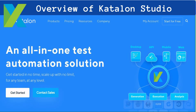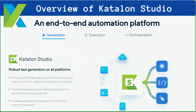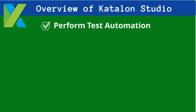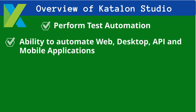Katalon Studio is a fairly simple, straightforward automation testing tool that you don't have to have great programming knowledge to write automation test cases. The primary reasons for the increase in popularity of Katalon Studio in automation testing are: easy to develop automated test cases for the entry-level automation tester, and it supports test automation for a wide range of applications including web, desktop, API, and mobile.